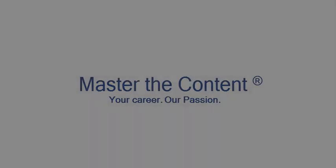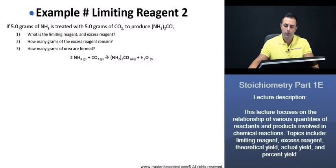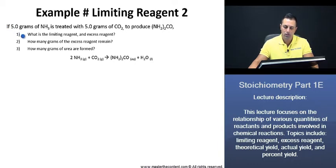Your career, our passion. Example limiting reagent 2. If 5 grams of ammonia is treated with 5 grams of carbon dioxide to produce urea, what is the limiting reagent and excess reagent? How many grams of the excess reagent remain? How many grams of urea are formed?